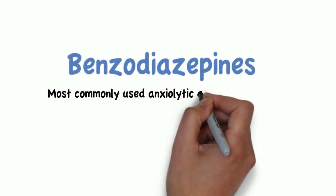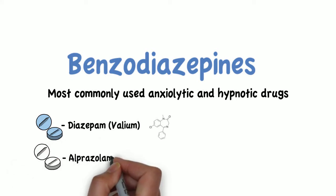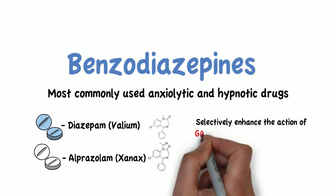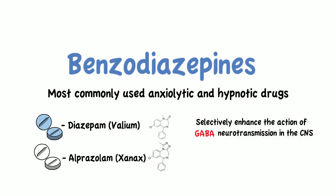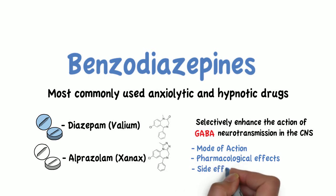Benzodiazepines are the most commonly used anxiolytic and hypnotic drugs. Some well-known benzodiazepines include diazepam and alprazolam. Benzodiazepines are a class of drugs that act to selectively enhance the action of GABA neurotransmission in the central nervous system. In this video, we will explain the mode of action behind this class of drugs, their pharmacological effects and their potential side effects.